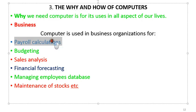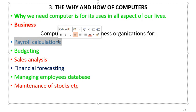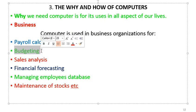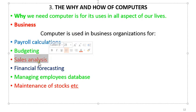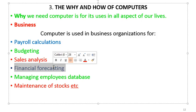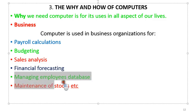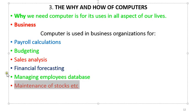The computer is used in business for many applications. We use computers for payroll calculations — computing all entitlements for employees. We use it for budgeting, sales analysis, and financial forecasting — based on current financial situations, we can forecast what may happen in two, three, or ten years. We also use computers for managing employees' databases and maintenance of stock.